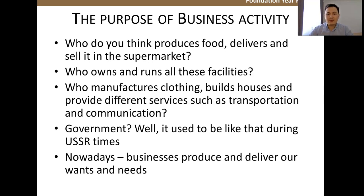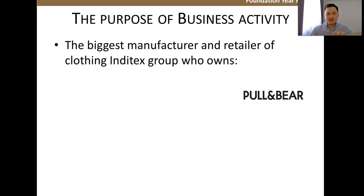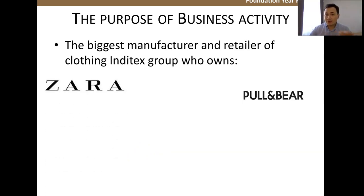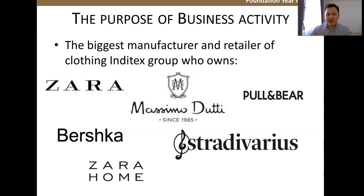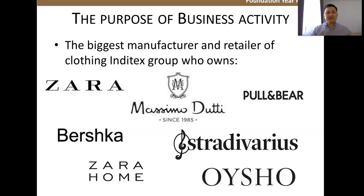Nowadays, businesses produce and deliver all our wants and needs. We're now going to define and combine all these concepts. One of the biggest manufacturers and retailers of clothing worldwide is a company called Inditex Group — Pull&Bear, Zara, Massimo Dutti, Bershka. All these brands are actually owned by one particular company, Inditex Group. You can imagine how big this company is — even if you go to the Mega Silk Way, you can see all these brands around you.